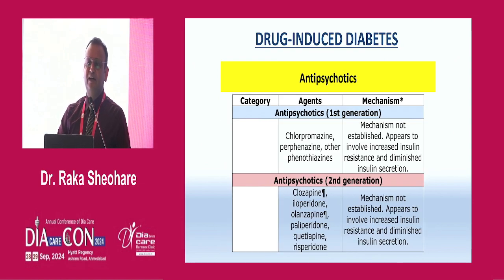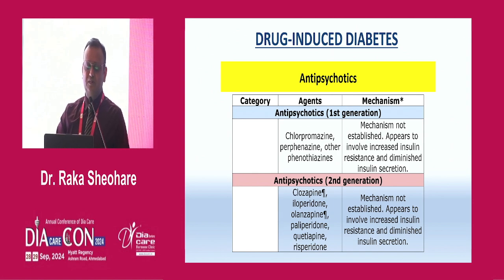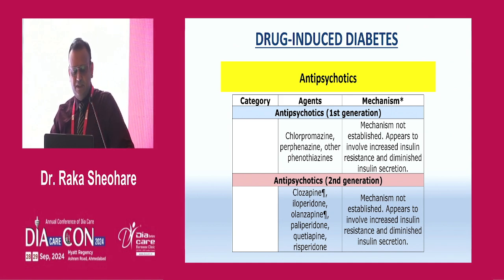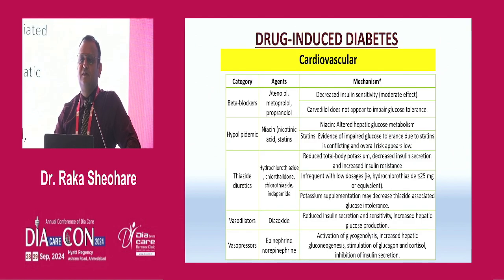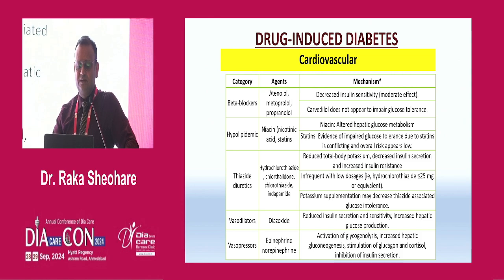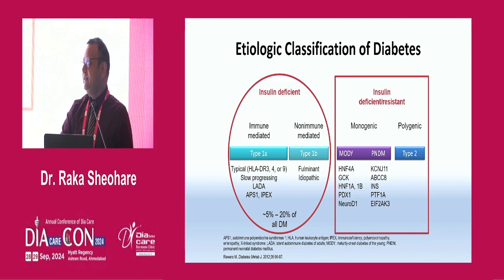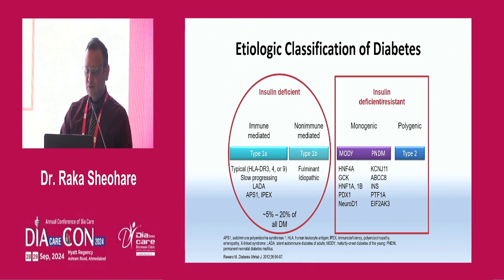Antipsychotic drugs are nowadays very common — gastroenterology colleagues use these drugs in many patients, and physicians also prescribe them. If a patient on antipsychotic drugs presents for the first time with diabetes, you need to consider drug-induced diabetes. In the post-COVID era, we have seen many such patients. Other commonly implicated drugs include beta-blockers, hyperlipidemic drugs, thiazide diuretics, vasodilators, and vasopressors. Regarding genetic forms of diabetes: immune-mediated is type 1, non-immune-mediated is type 2, and there are insulin-deficient, insulin-resistant, monogenic, and polygenic forms.